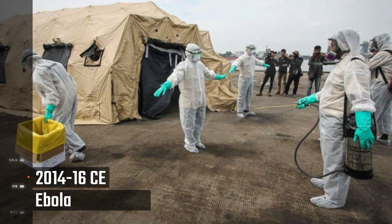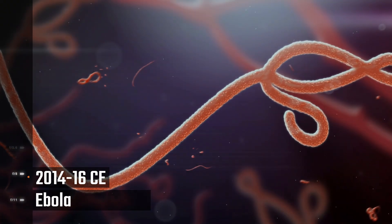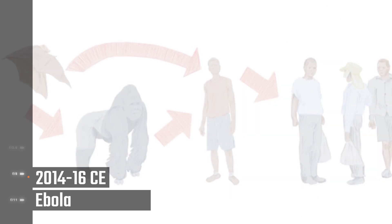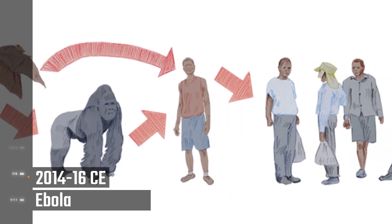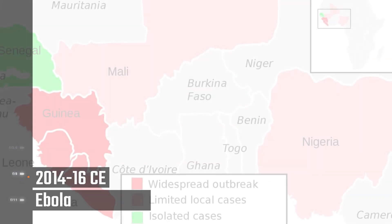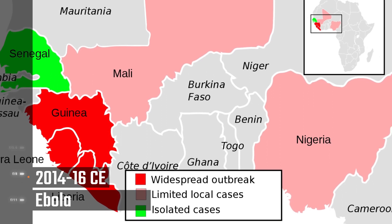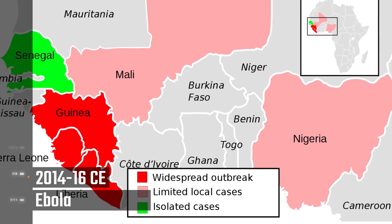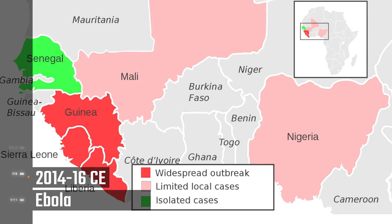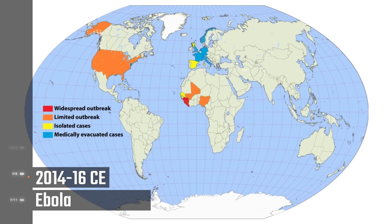Ebola, 2014 through 2016. Ebola Virus Disease (EVD), formerly known as Ebola hemorrhagic fever, is a severe, often fatal illness affecting humans and other primates. The virus is transmitted to people from wild animals such as fruit bats, porcupines, and non-human primates, and then spreads in the human population. A total of 28,616 cases of EVD and 11,310 deaths were reported in Guinea, Liberia, and Sierra Leone, with an additional 36 cases and 15 deaths when the outbreak spread outside these countries.